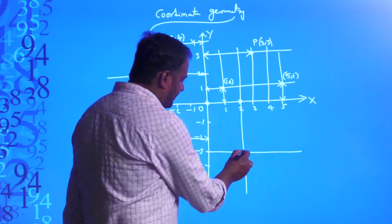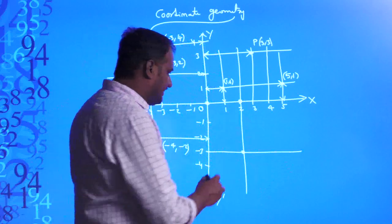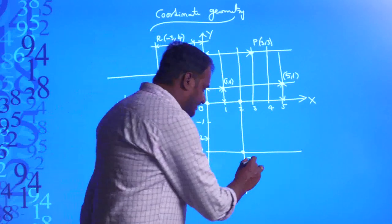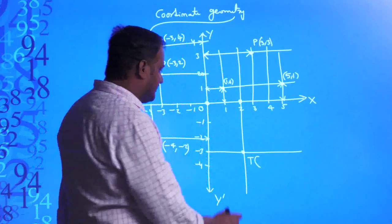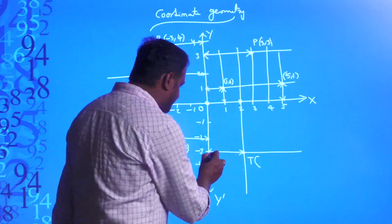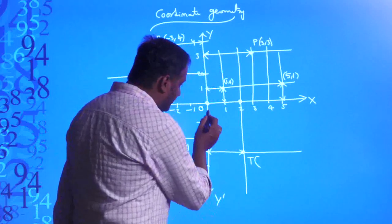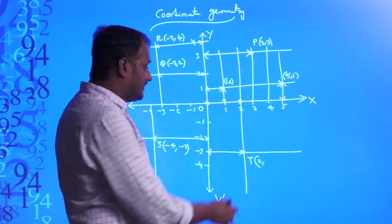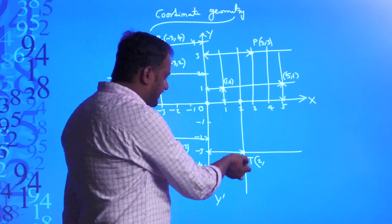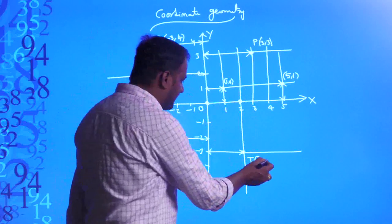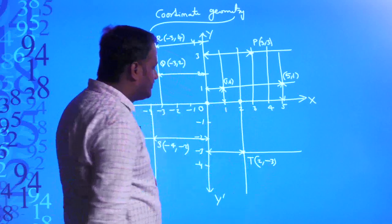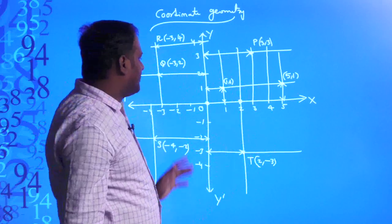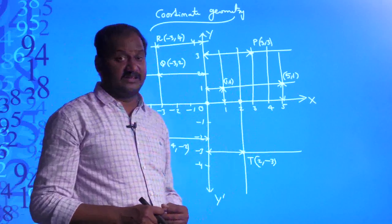What are the coordinates of point T? The horizontal distance is 2 units in the positive direction, so 2. And the vertical distance is negative 3. So the position of the point T is (2, −3). This is the way of plotting points on the graph sheet.